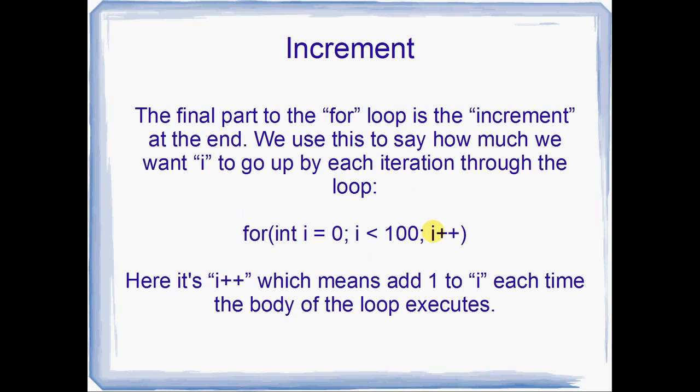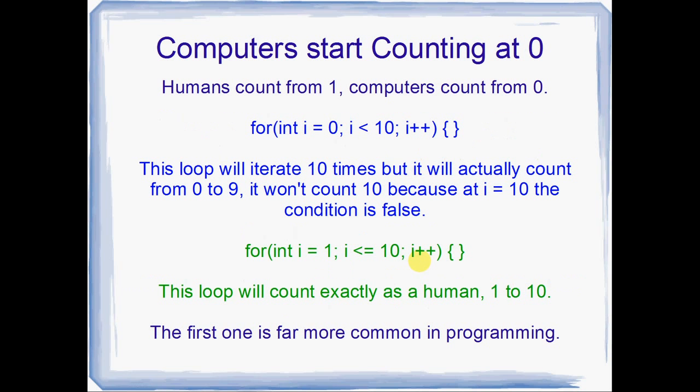The final bit is the increment or decrement. Right here I'm incrementing. This is really the key to the whole thing. This is what stops the loop from going forever. We increment i each round. What actually happens is it goes the init first, then it checks the condition. If the condition's true, it'll run the body of the loop, then it comes to the increment, then it checks the condition again, then it runs the body, increment, condition, body, increment, condition, body, until the condition is false. The increment right here just means add one to i each round. So this particular loop will execute the body of the loop 100 times.